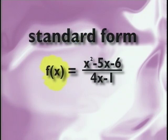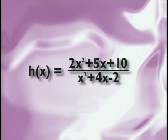Some other rational functions are g of x equals x plus 2 over x minus 1, and h of x equals 2x squared plus 5x plus 10 over x squared plus 4x minus 2.